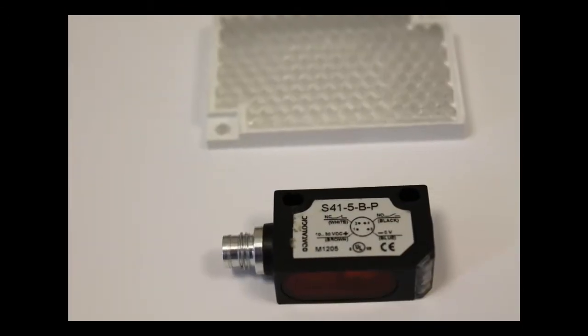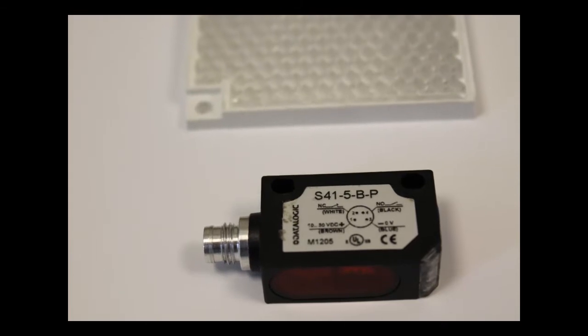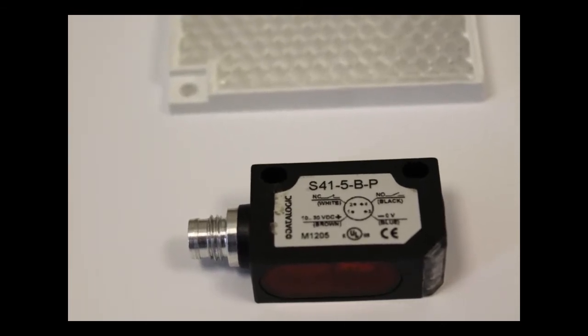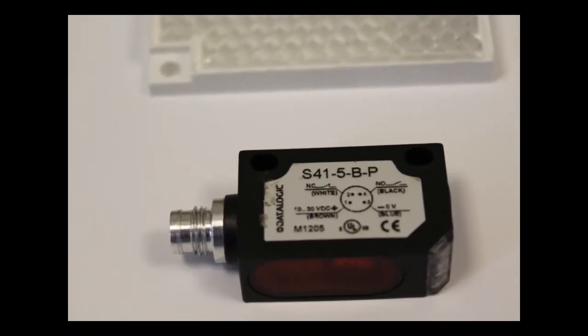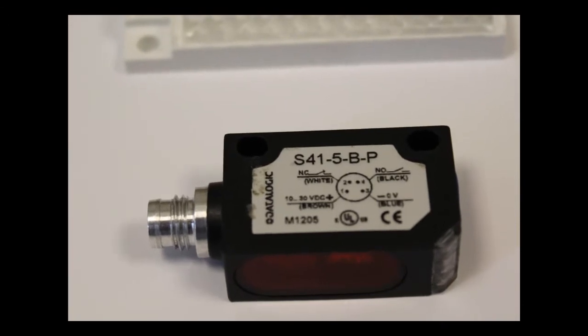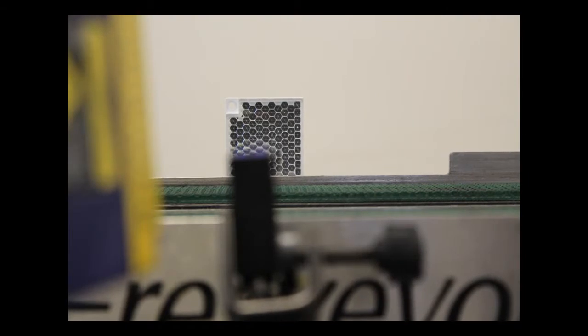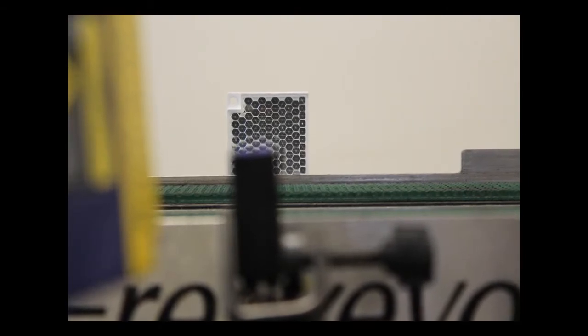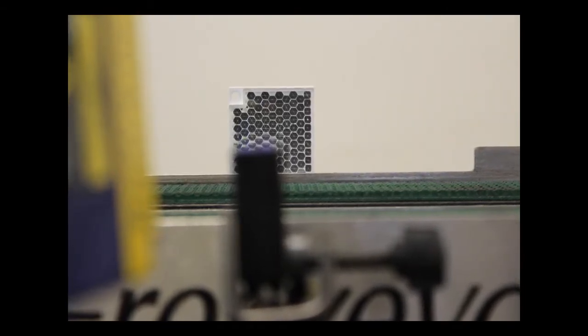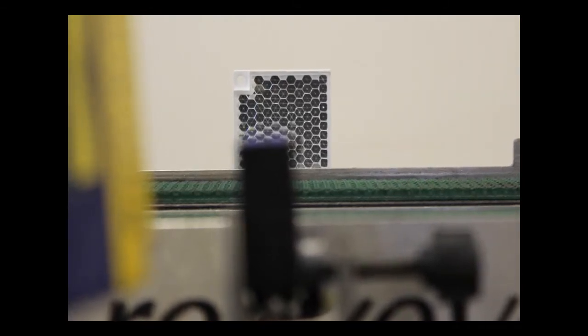Most users will opt for the S415BP polarized retro broken beam sensor with a 2.5mm range, preferred because the package of any shape or color will break the beam reliably. The sensor is placed on one side of the conveyor and the reflector on the other. When the product breaks the beam, the scanner is triggered to scan the barcode.